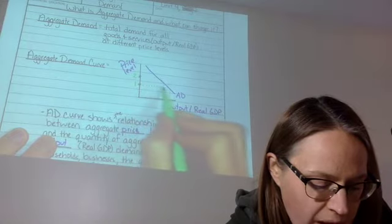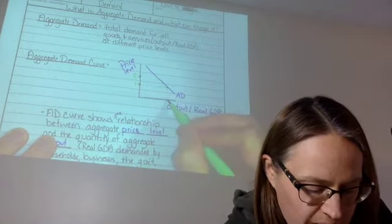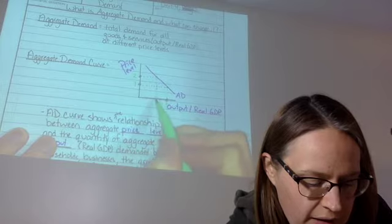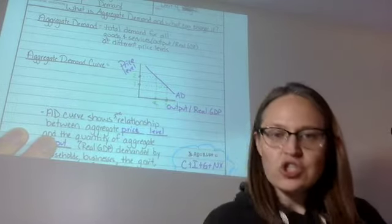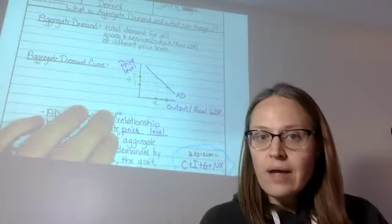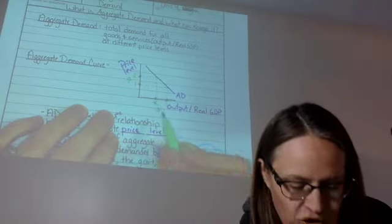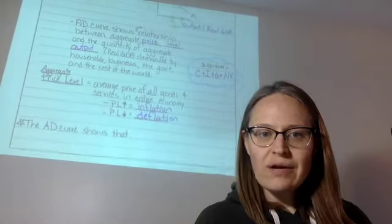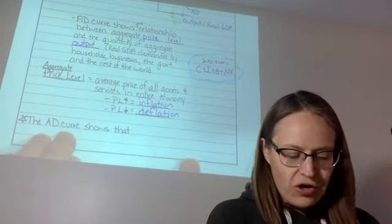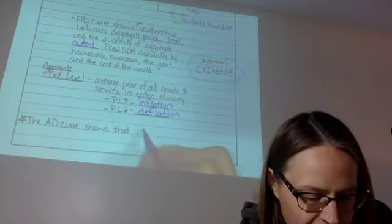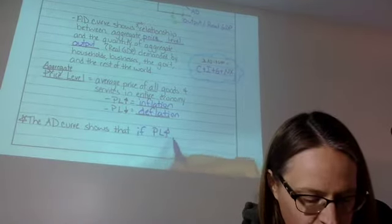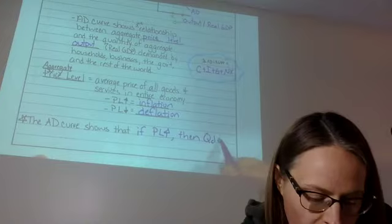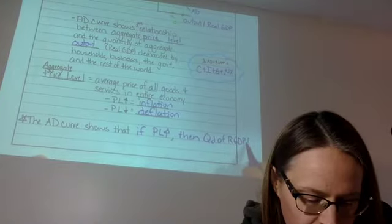Well, at the price level of one, that would put our quantity demanded of real GDP here. And at the price level of two, that would put it here. So what this graph shows us is that if the price level goes up, then the quantity demanded of real GDP goes down. So let's get that written down here at the bottom. The aggregate demand curve shows that if price level goes up, then quantity demanded of real GDP goes down.